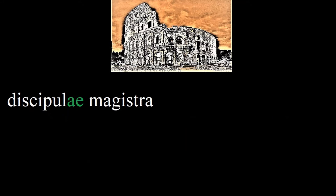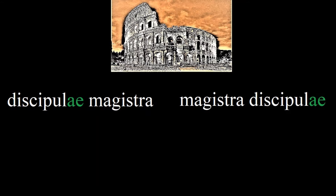Discipulae magistra — the student's teacher. We can also say magistra discipulae, because word order is flexible in Latin. These two phrases have the exact same meaning. Some scholars claim the second is more common, but this topic is controversial.